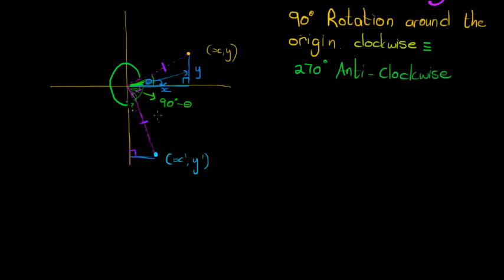This angle plus that angle adds up to 90 degrees as well. So this angle must equal 90 degrees minus (90 degrees minus theta), which gives us theta. So we have the exact same triangle — just rotated. The opposite side is y and the adjacent side is x — those are lengths, keep that in mind.